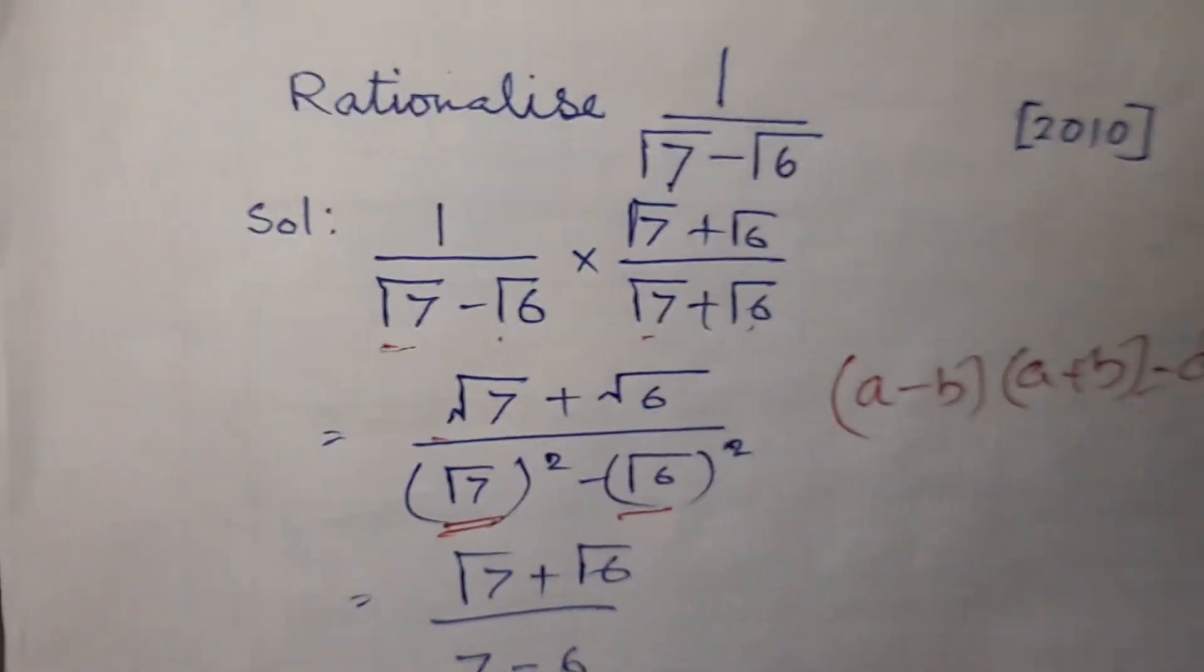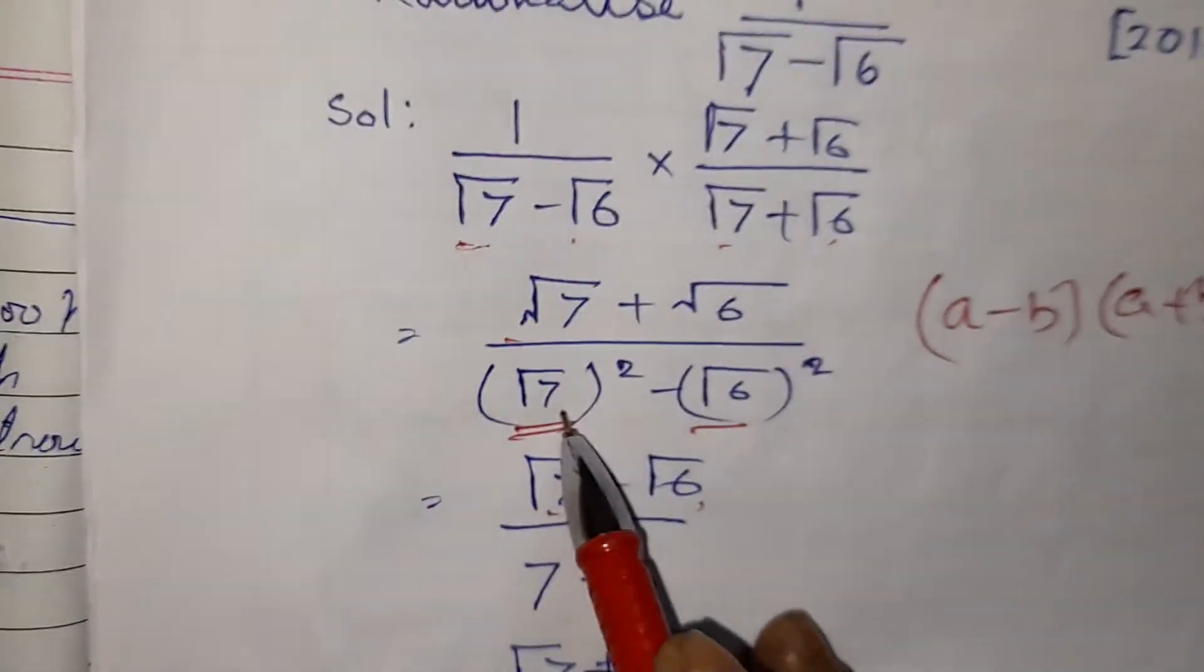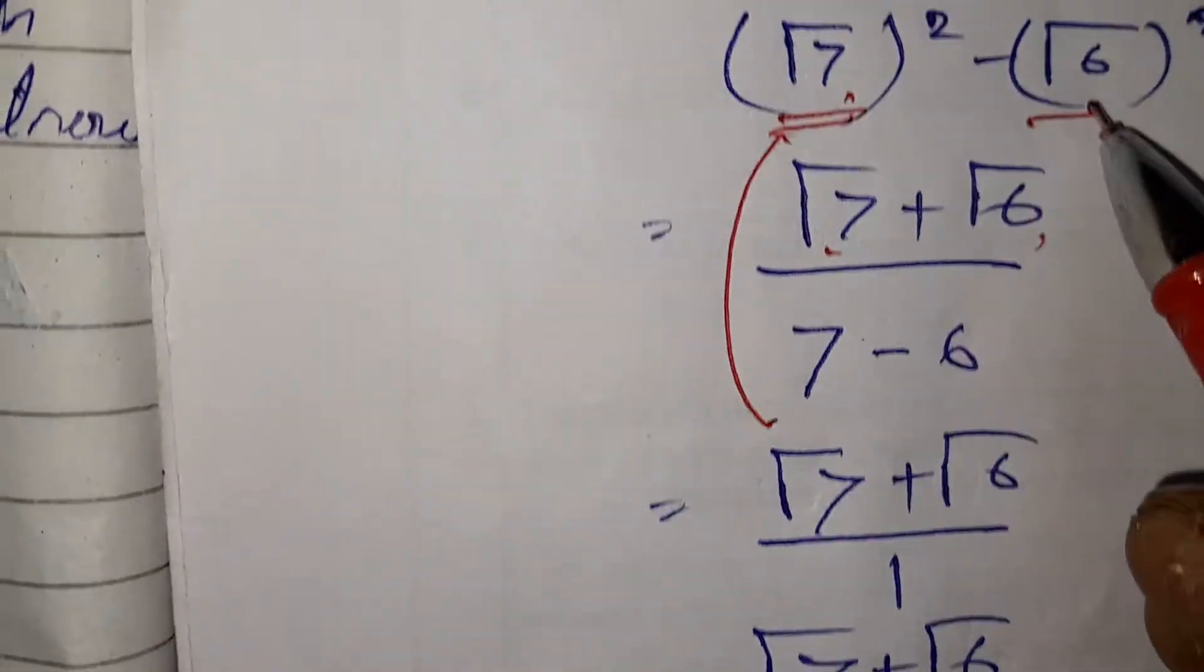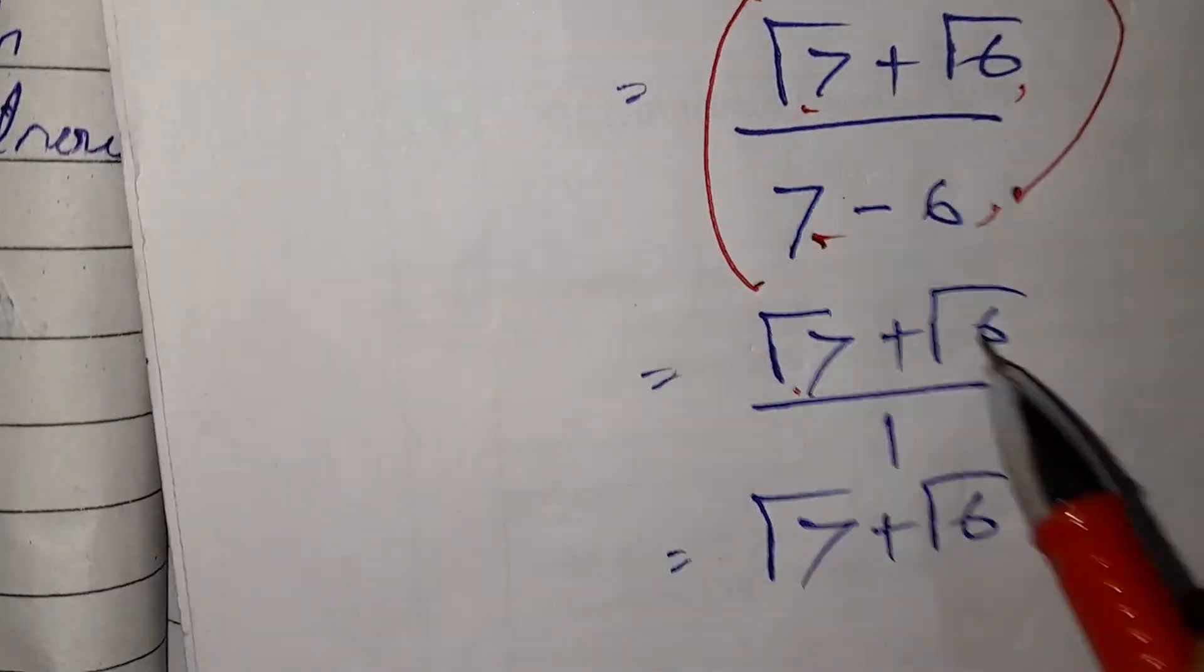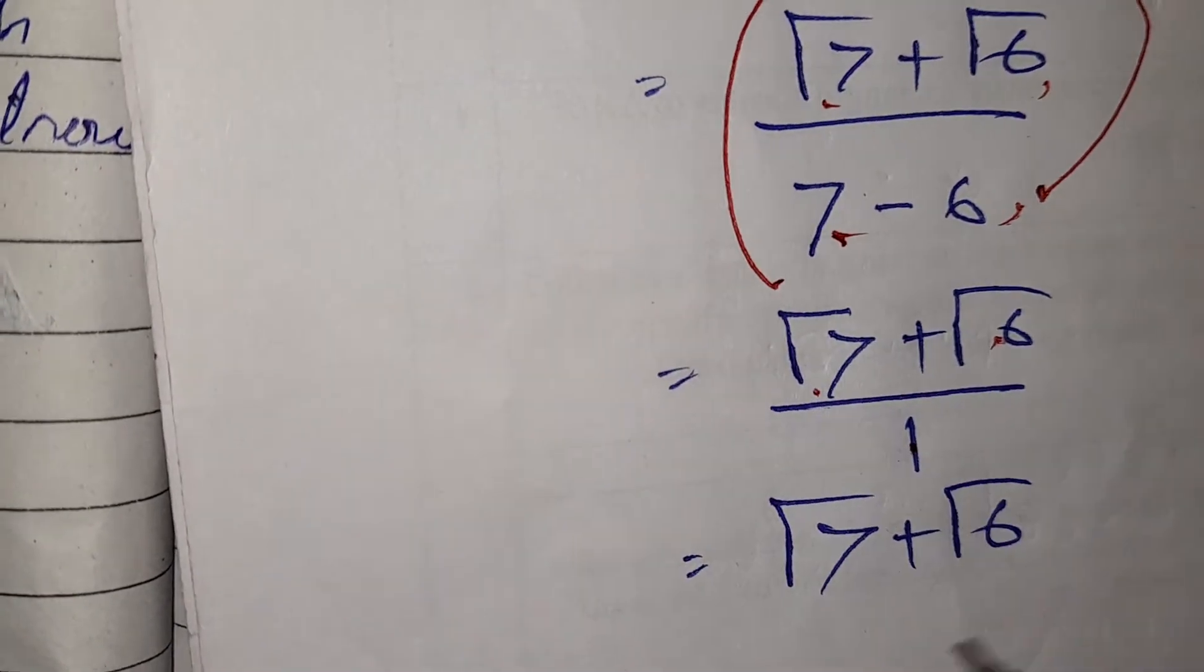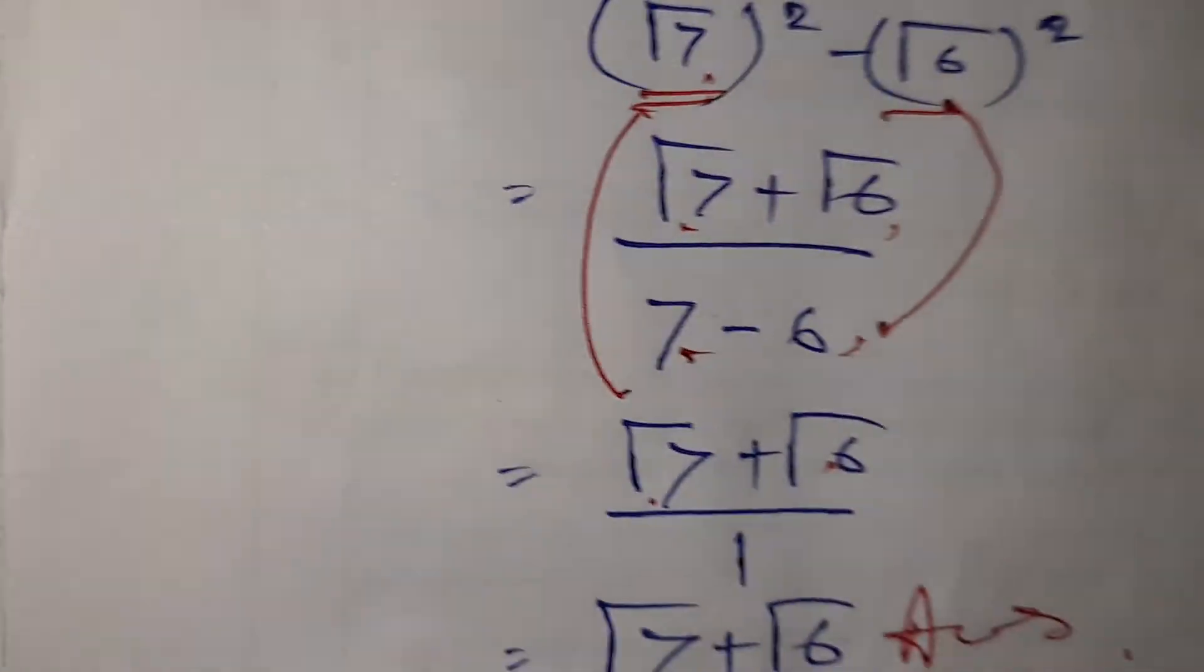So numerator will be root 7 plus root 6 by root 7 whole square, which is 7, and root 6 whole square, which is 6. 7 minus 6 equals 1. So the answer will be root 7 plus root 6 by 1, which is root 7 plus root 6.